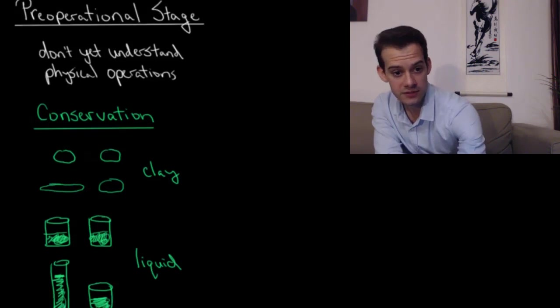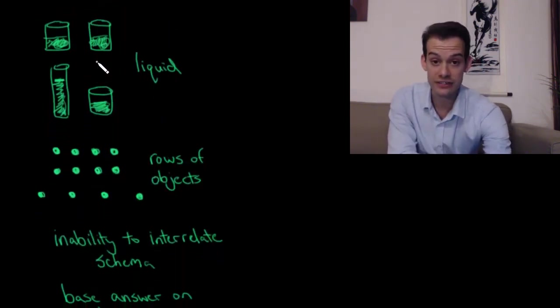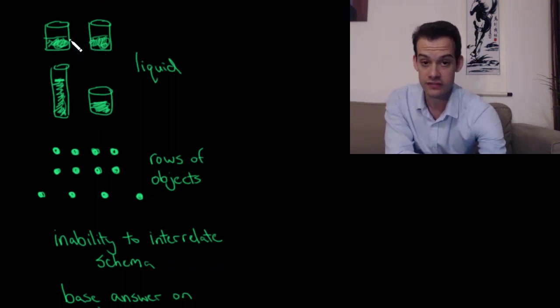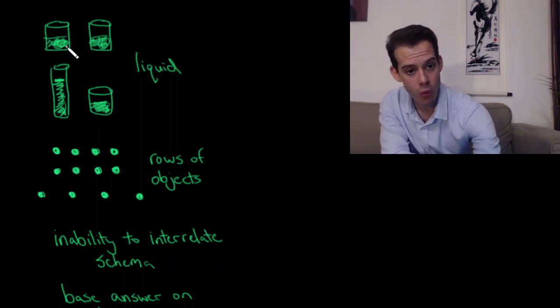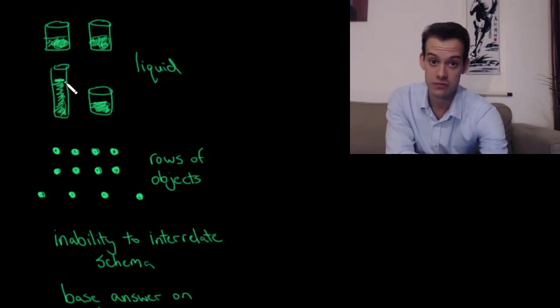This didn't just apply to lumps of clay. Piaget found that this could be done with other things like glasses of liquid. You take two glasses of liquid that the children will agree are the same amount, and then if you just pour that liquid into a tall thin glass, suddenly the children will believe that this glass has more.